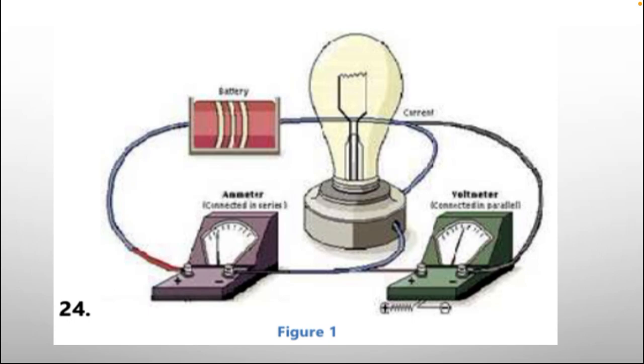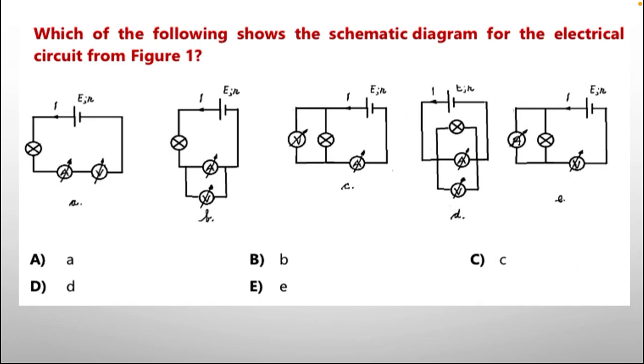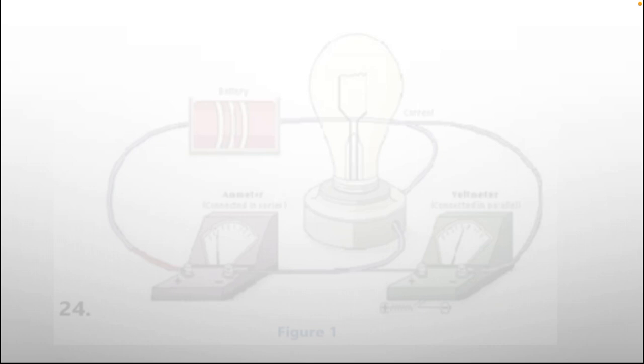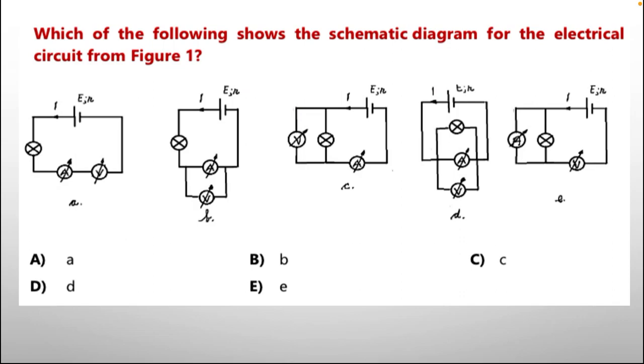Next is question number 24. And you can actually see the picture of this question, where there is a bulb, battery, ammeter and voltmeter is connected in parallel to the bulb. So, which of the following shows the schematic diagram for the electrical circuit from figure 1? This is a diagram. And then we have schematic diagrams in every option. And which one is the correct one? We need to choose the right answer.